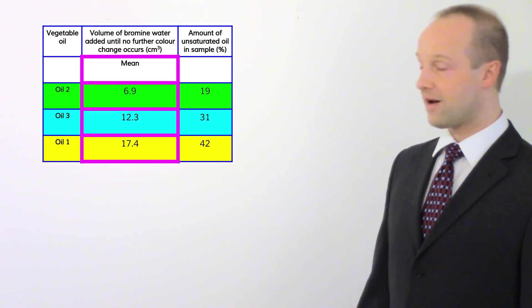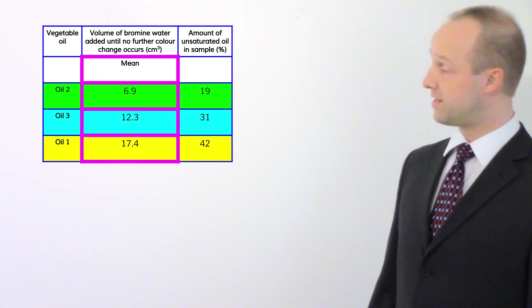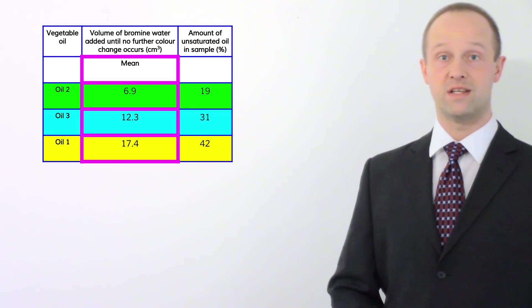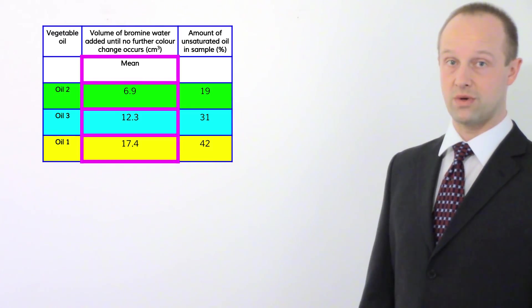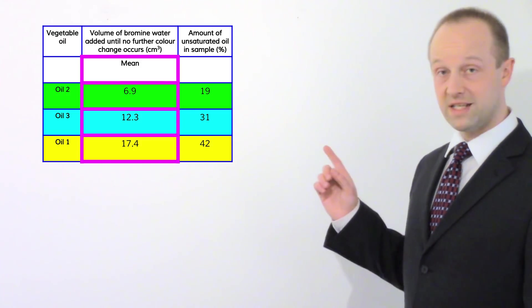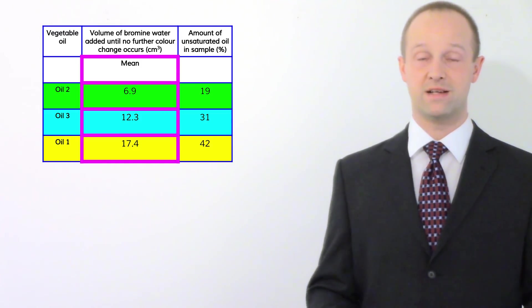So let's have a look at what we've got here. Well you can see now that they're in order that as the mean number of drops of bromine water is increasing the amount of unsaturated oil as a percentage in our sample is also increasing. Phrase it like that. Use what it says in the table as the headings. Quote directly from it.